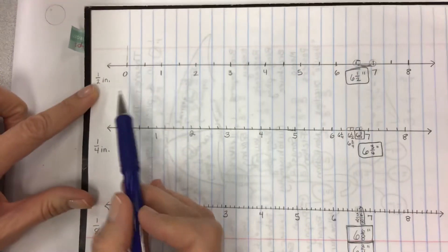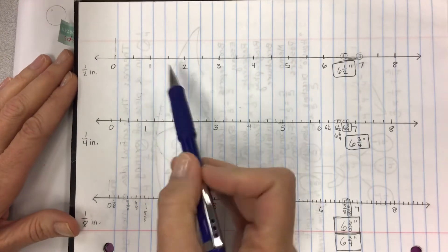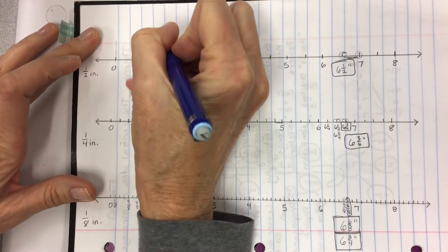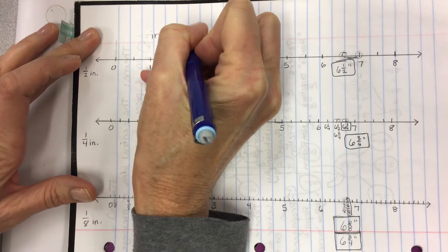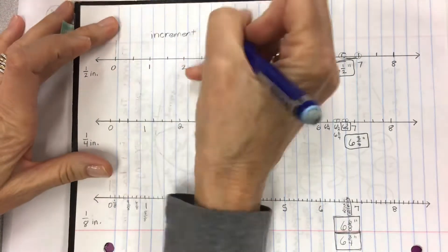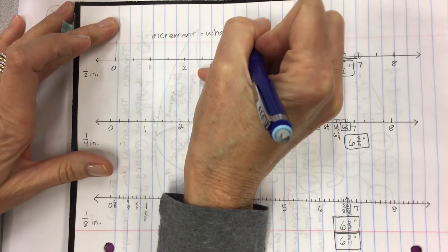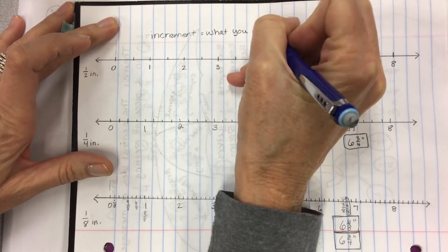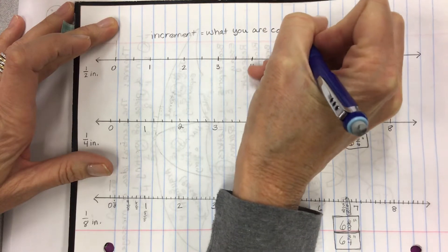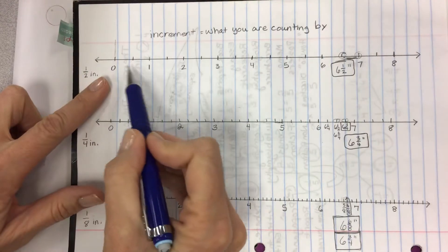Now in this one, it has half-inch increments. Here's a word for you. Increment. That means what you're counting by. Okay, what you are counting by. So here we're counting by half-inch.